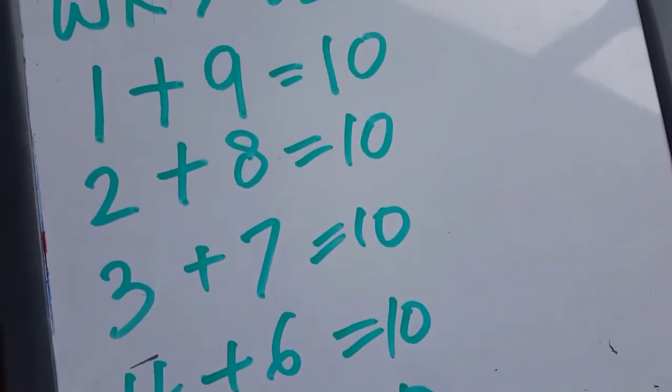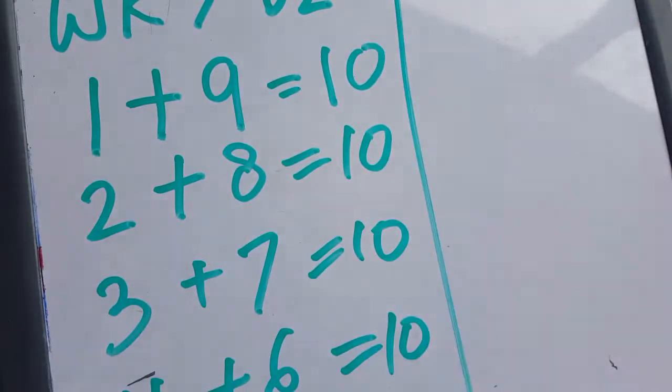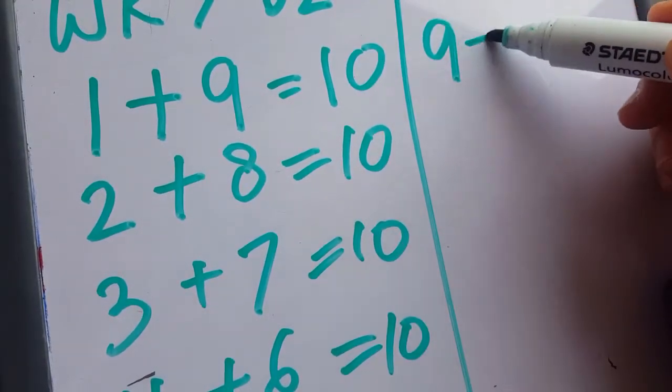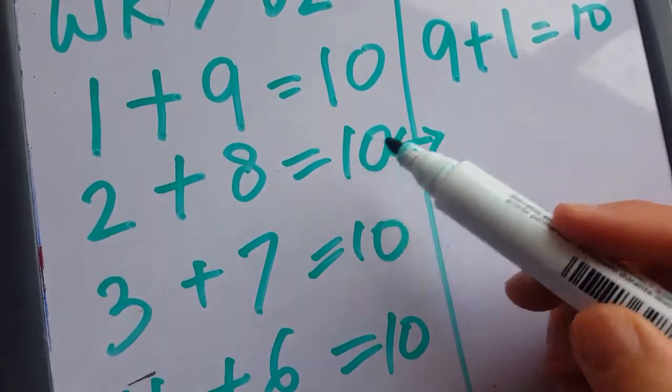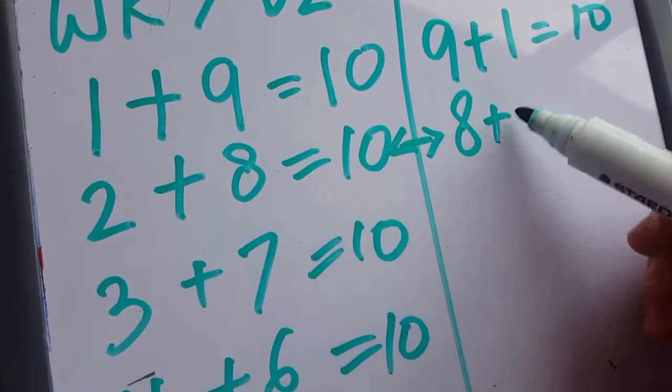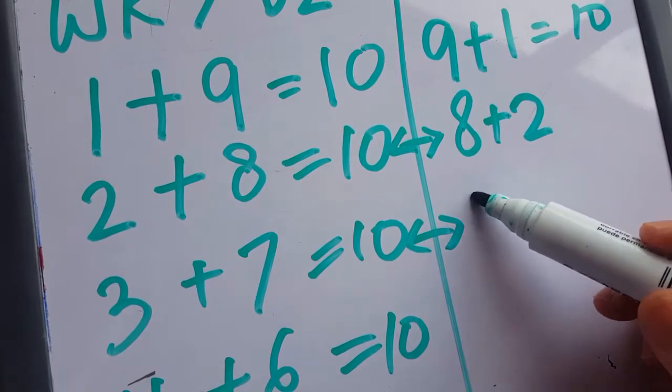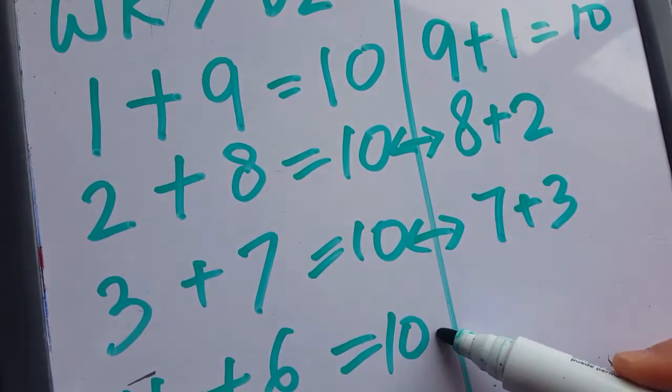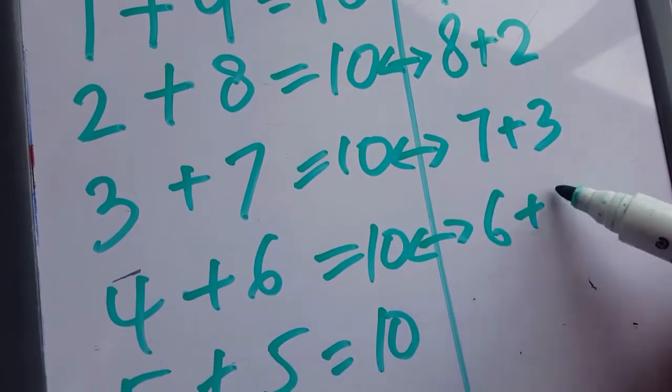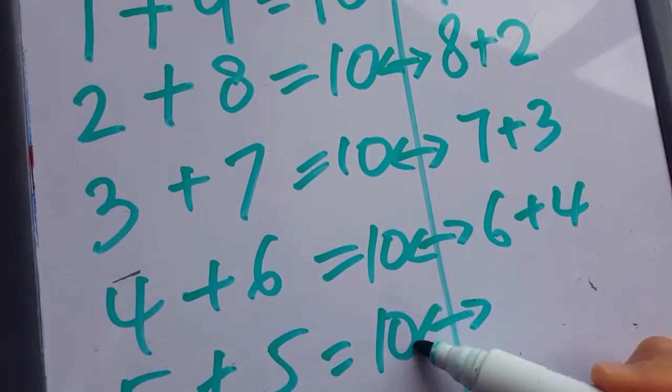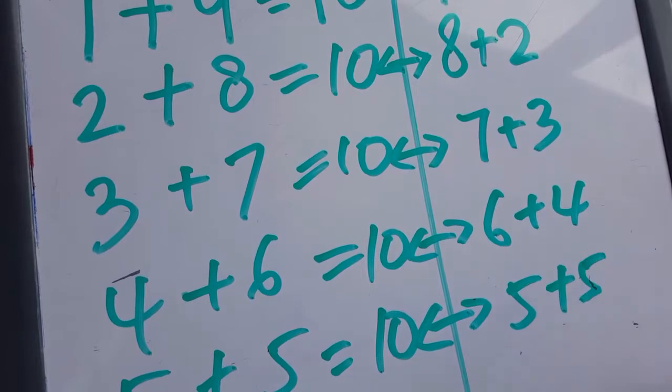Now from this, emphasize that 1 and 9 is the same as, you can reverse the number, 9 and 1 makes 10. And can I reverse this as well? 2 and 8 is the same as 8 and 2. And 3 and 7 is the same as 7 and 3. And 4 and 6 is the same as 6 and 4. And 5 is just the same, however you reverse it.